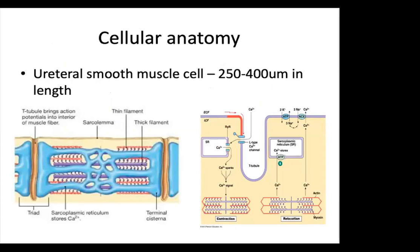The ureteral smooth muscle cell is around 250–400 micrometers in length. Sarcoplasmic reticulum dispersed in the cytoplasm serves as calcium storage sites. Contractile proteins actin and myosin interact depending on local calcium ion concentration to produce contraction or relaxation. Any process leading to a significant increase in calcium in the region of the contractile proteins results in contraction; conversely, a decrease results in relaxation.